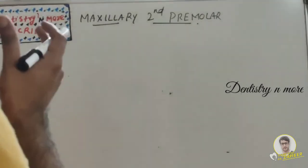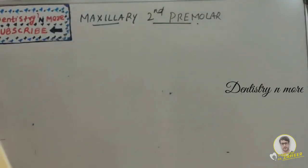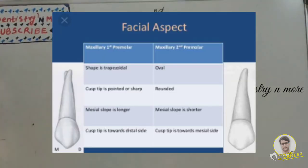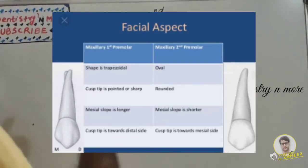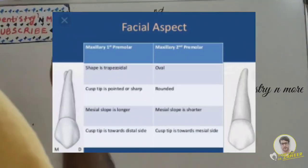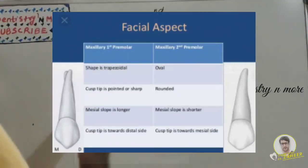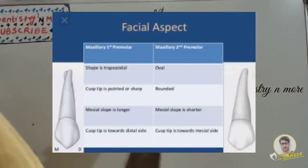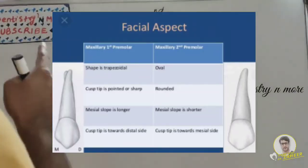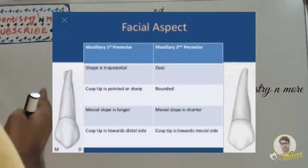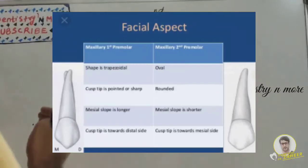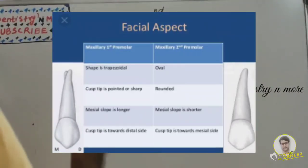Now the comparison between maxillary first and second premolars. On the buccal aspect: the first premolar has a concave mesial outline and less concave distal outline, whereas the second premolar has a slightly convex mesial and more convex distal. The mesial slope is larger than the distal on the first premolar; on the second, the mesial slope is shorter than the distal, and the tip is displaced to the mesial side. Contact areas differ: on the first premolar, mesial is just occlusal to the middle of the middle one-third and distal at the junction of middle and occlusal one-third; on the second premolar, mesial is at the junction of middle and occlusal one-third and distal at the middle of the middle one-third.